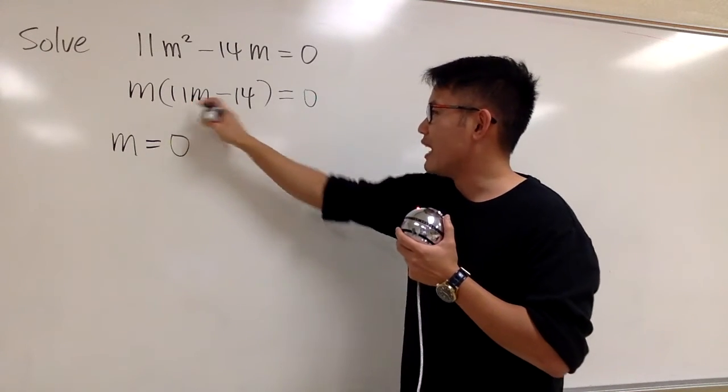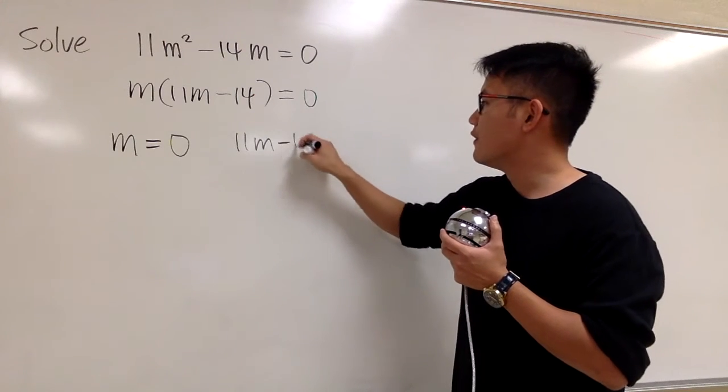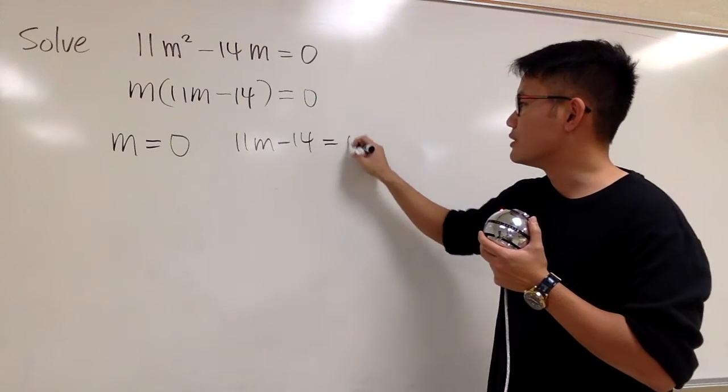And the other one, we have the 11m minus 14. We will set this equal to 0 as well. And we just have to do some work right here.